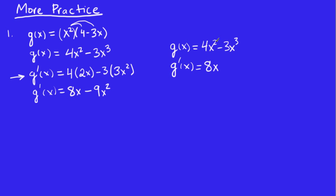4 times 2 is 8, and then bring down the power of 2 by 1 to make it a 1. And we don't have to write the 1. And over here, we have 3 times negative 3, which is negative 9. x to the power of 1 less than 3 is 2. Same answer.